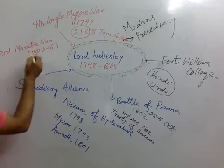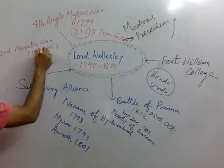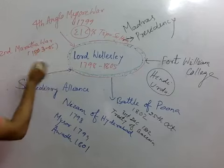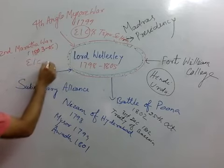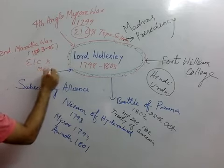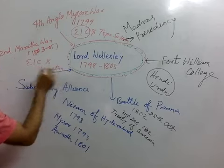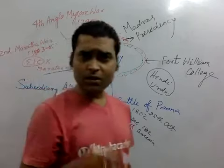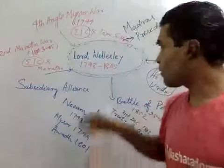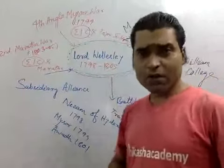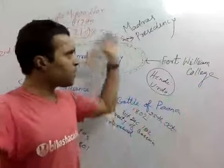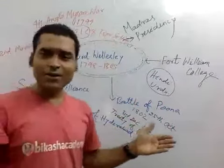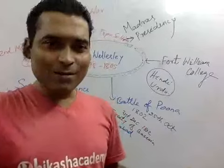Now we'll talk about the Second Maratha War, which happened from 1803 to 1805 — for two years — between the East India Company and the Marathas. Simply remember that the East India Company was the winner. This is all about Lord Wellesley's policy. Remember the points from this flowchart. Wishing you happy learning, thank you very much.